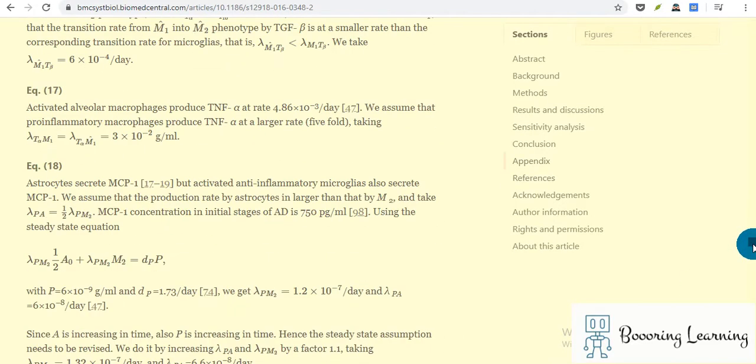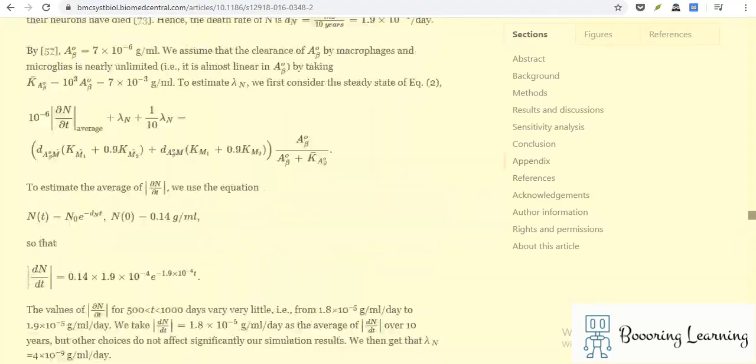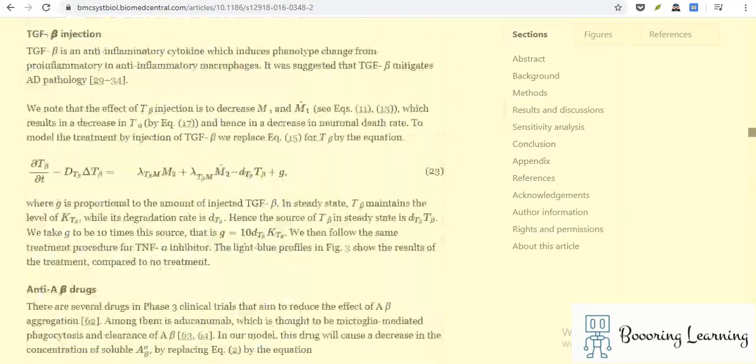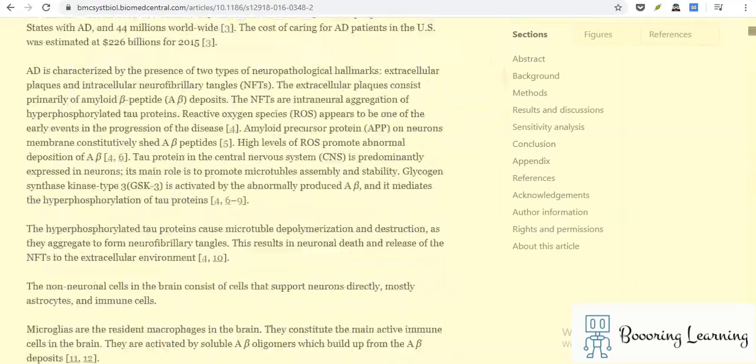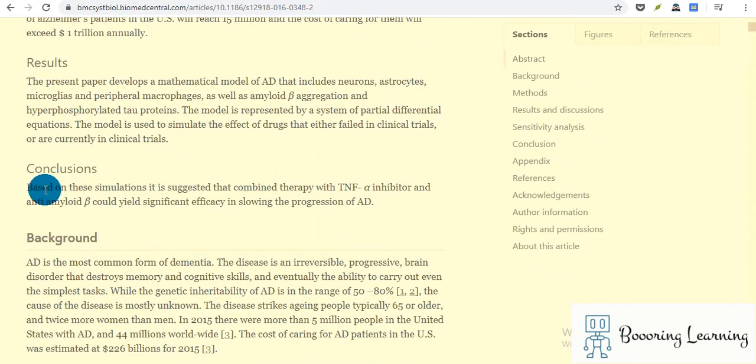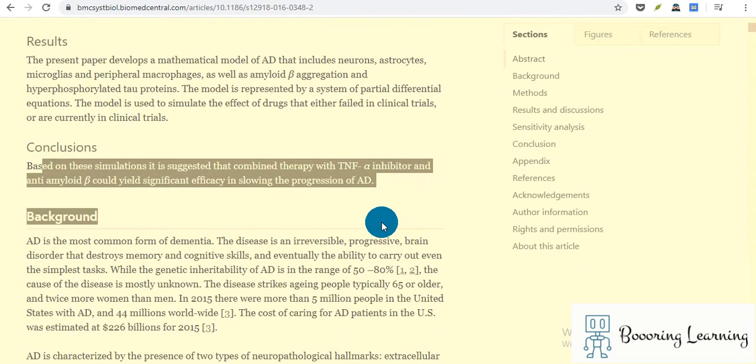The references. It doesn't end up with the conclusion, and the conclusion is over. We already read the conclusion actually. Based on these simulations, we suggested that combined therapy with TNF alpha inhibitor and anti-amyloid beta could yield significant efficacy in slowing the progression of Alzheimer's disease. So that is the conclusion.